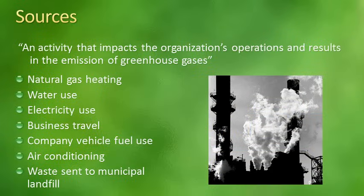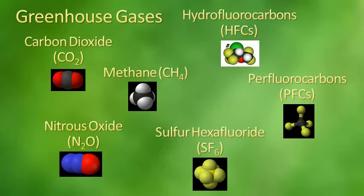A source in this context is an activity that impacts the organization's operations and results in the emission of greenhouse gases. Some examples are listed here. The six categories of greenhouse gases identified under the Kyoto Protocol are carbon dioxide (CO2), methane, nitrous oxide, sulfur hexafluoride, hydrofluorocarbons, and perfluorocarbons. Note that HFCs and PFCs are not single gases, but rather groups of multiple greenhouse gases, each with varying effects on climate change.